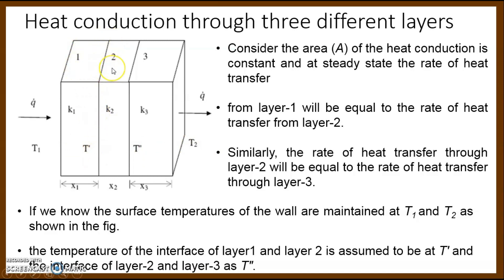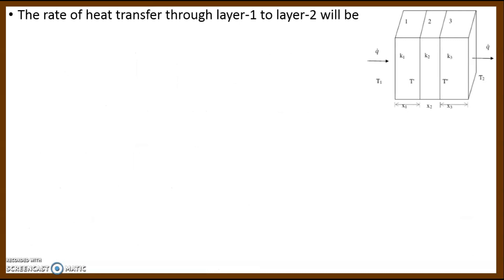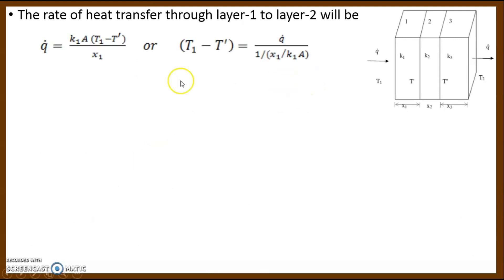The interface temperatures T' and T'' are the temperatures at the surfaces connecting layer 1 to layer 2 and layer 2 to layer 3 respectively. We are interested in finding these temperature drops between layers and calculating the unknown interface temperatures. Applying Fourier's law for layer 1: Q equals minus K1·A·dT/dx. Rearranging, T1 minus T' equals Q-dot times (X1/(A·K1)).